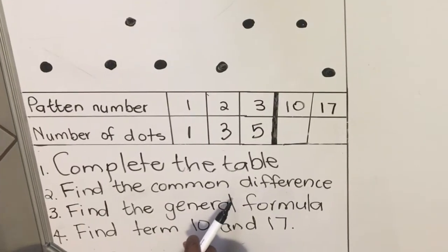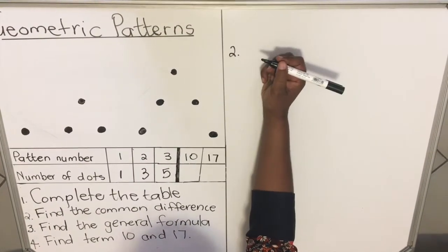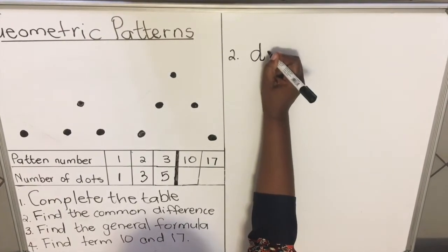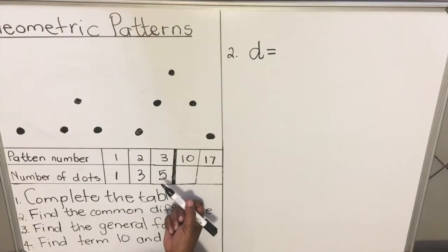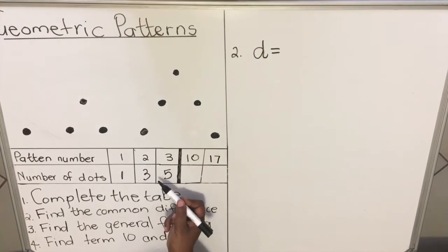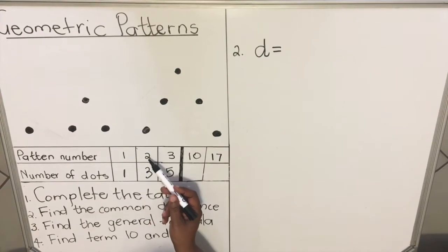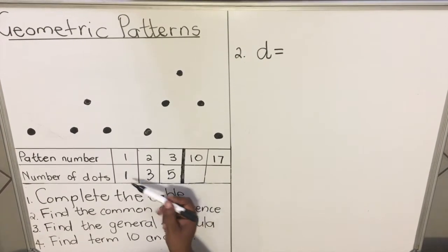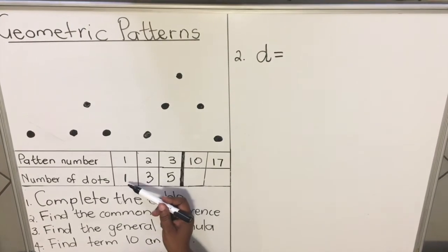This question guides us that it's a common difference. We write the common difference as 'd'. To find it, we subtract consecutive terms — meaning terms that follow each other. Term one is one, term two is three, term three is five.